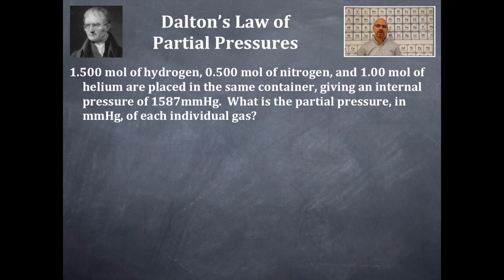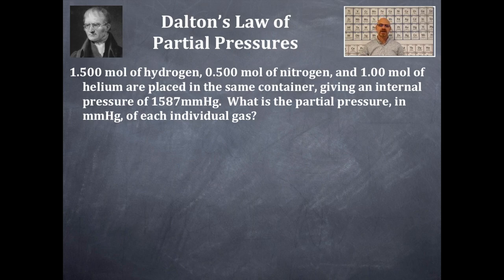Here's our example. We have 1.50 moles of hydrogen, 0.500 moles of nitrogen, and 1 mole of helium placed in one single container, giving an internal pressure of 1,587 millimeters of mercury. What is the partial pressure in millimeters of mercury of each individual gas — hydrogen, nitrogen, and helium?